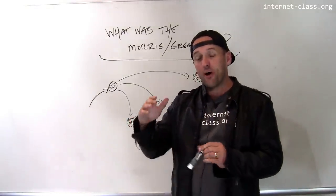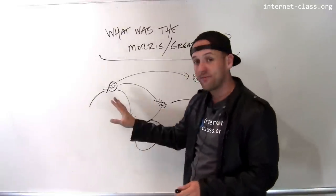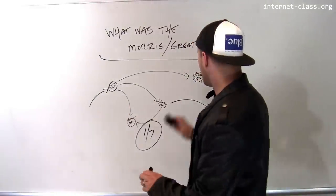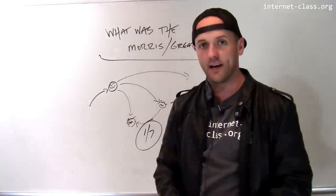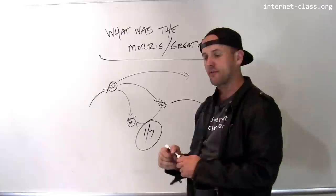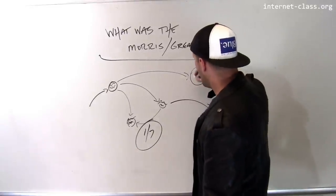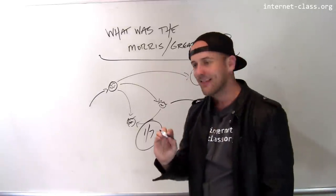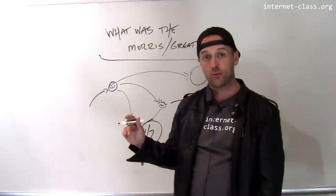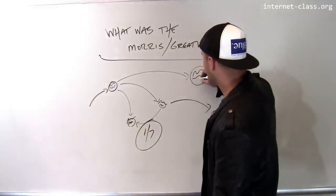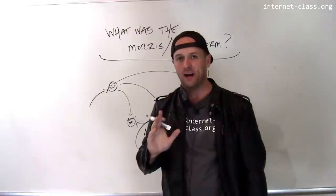And what's interesting is, it was almost impossible to get rid of this thing, because what would happen is, let's say I take this machine off the internet and I remove all the copies of the worm, I reinstall its operating system or its software. As soon as I bring it back online, there's so many other copies of this worm out here that it's infected again immediately with a bunch of copies of the worm, and I'm right back where I started.